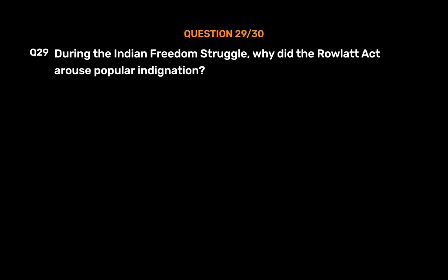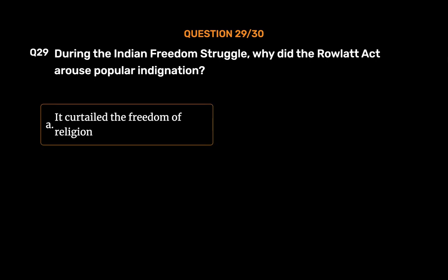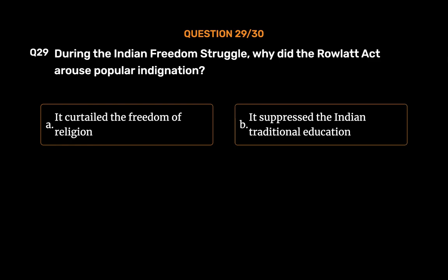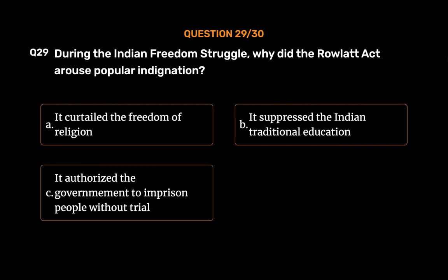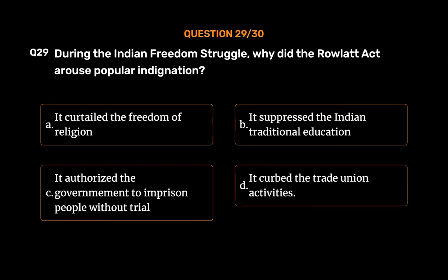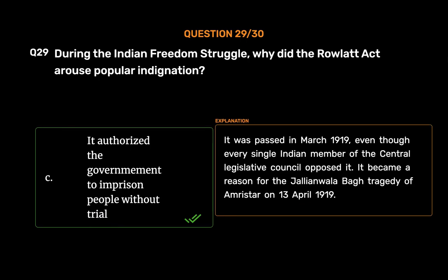Question No. 29. During the Indian Freedom Struggle, why did the Rowlatt Act arouse popular indignation? Option A, It curtailed the freedom of religion; Option B, It suppressed Indian traditional education; Option C, It authorized the government to imprison people without trial; Option D, It curbed trade union activities. The correct answer is Option C — it authorized the government to imprison people without trial. It was passed in March 1919, even though every single Indian member of the Central Legislative Council opposed it. It became a reason for the Jallianwala Bagh tragedy of Amritsar on 13 April 1919.